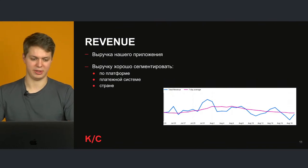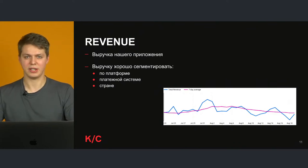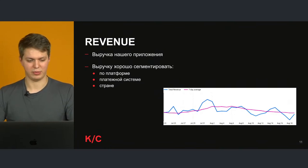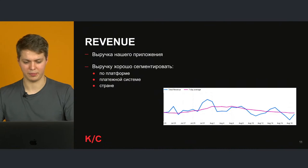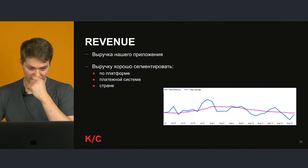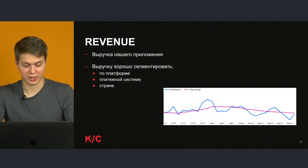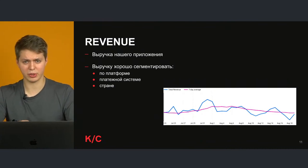Revenue (выручка) — если можно выбрать одну-две-три метрики, это количество пользователей и revenue. Это то, что очень любят директора и C-level executives: CEO, CFO и другие. Один этот график покажет общее состояние приложения. Выручку хорошо сегментировать по платформе: ни для кого не секрет, что пользователи iOS в целом гораздо более платёжеспособны, хотя их обычно меньше, чем пользователей Android.